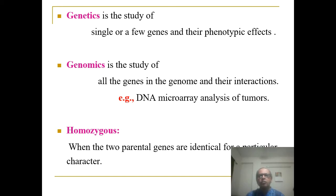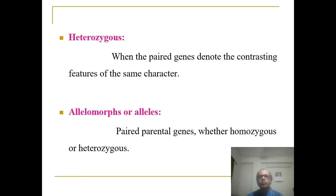Homozygous means when the two parental genes are identical for a particular character — such as both being short genes or both being tall genes. Heterozygous is when the paired genes denote contrasting features for the same character, such as when a person contains both short genes and long genes. Allelomorphs are paired parental genes, whether homozygous or heterozygous.